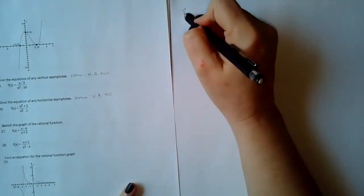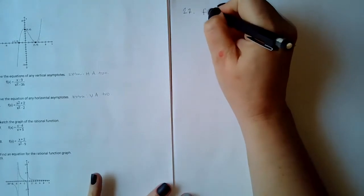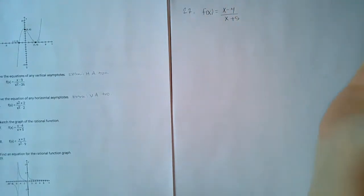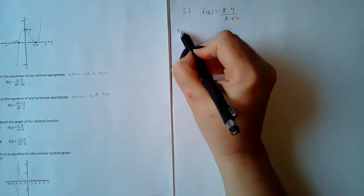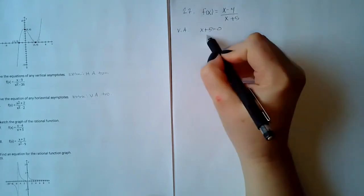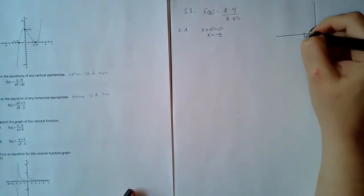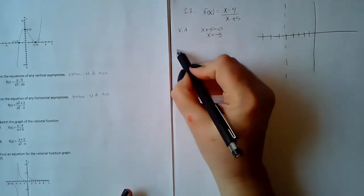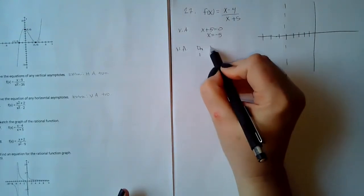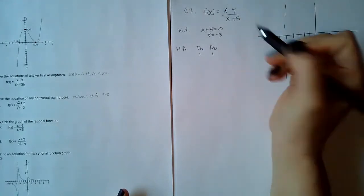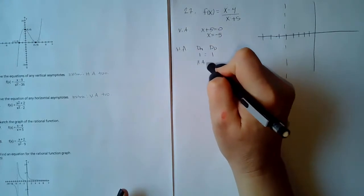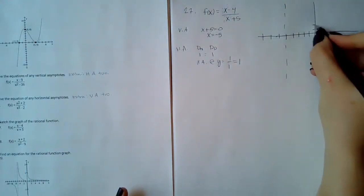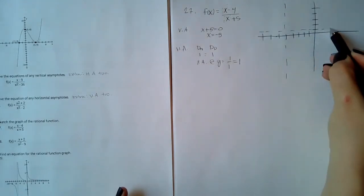Number 27 asks us to sketch the graph, so we need asymptotes, intercepts, and extra points. For the vertical asymptote, set the denominator equal to zero and get x = −5, so I draw that asymptote. For the horizontal asymptote, the degree of numerator is 1 and degree of denominator is 1 — they're equal — so the horizontal asymptote is y = 1/1 = 1. I draw that horizontal asymptote at y = 1.